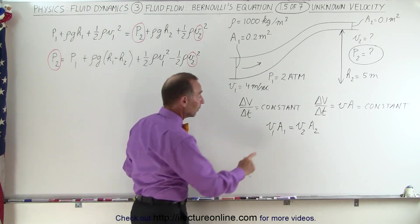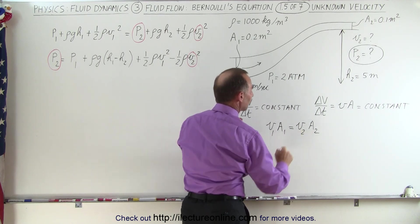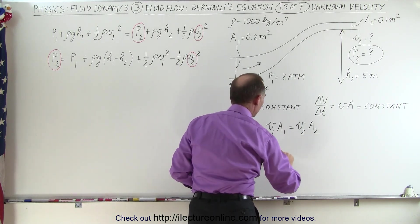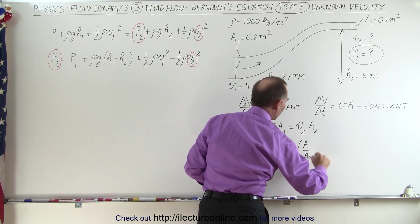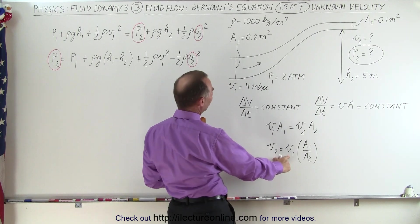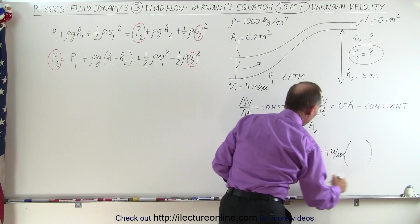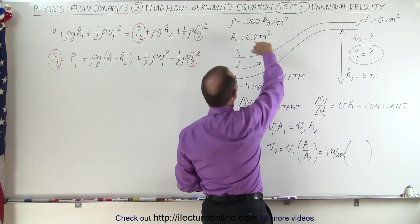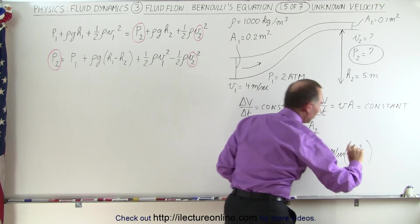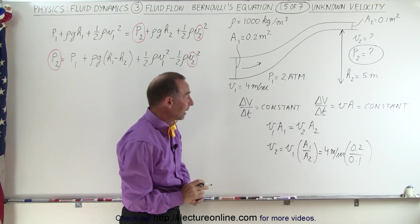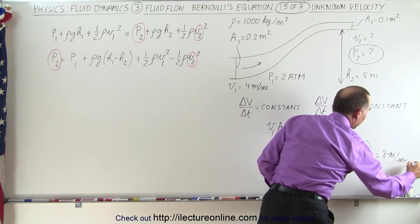And since we know the velocity at point 1 and we know the cross sectional areas at both places, we can solve this for V2. So V2 becomes equal to V1 times the ratio of A1 divided by A2. Since V1 is equal to 4 meters per second and then we put in the ratios of A1 to A2, so A1 here is 0.2, A2 is 0.1, we can leave out the units because they cancel anyway. So you can see that the velocity at point 2 must be 8 meters per second.